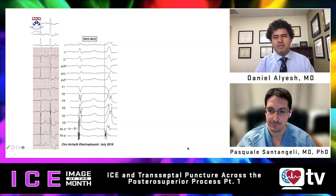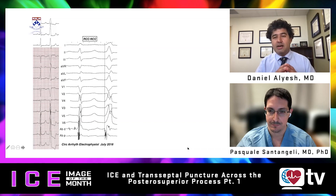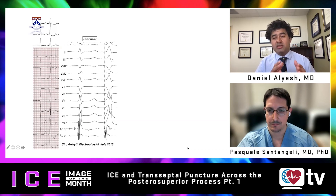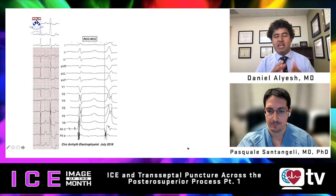This episode will be split into two parts. Part one will focus on arrhythmias and ablation from the posterior superior process region and ICE imaging. Part two will focus on the Gerbode or trans-right-atrial access for double mechanical valves for VT ablation.